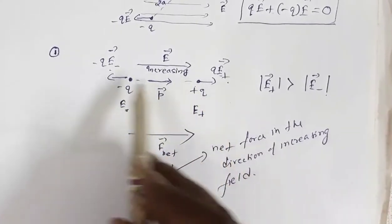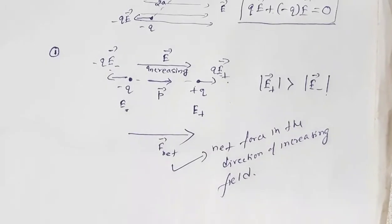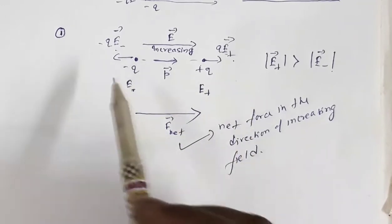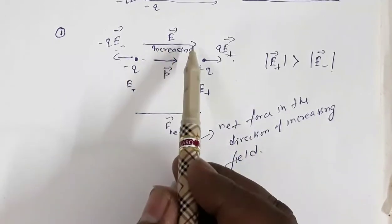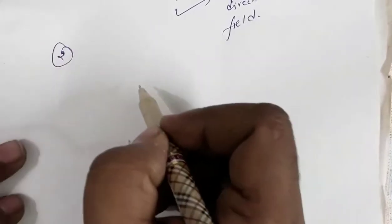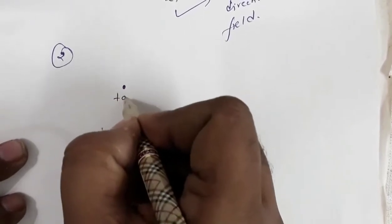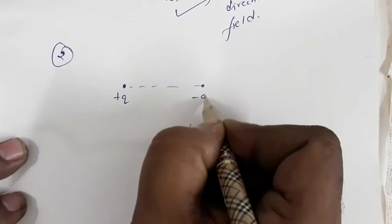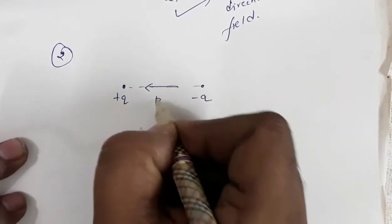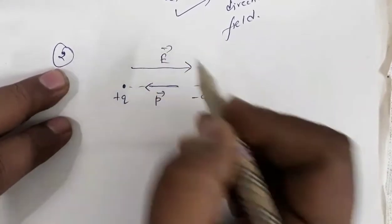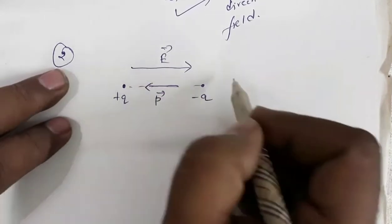So the net force is in the direction of increasing field. In this case the dipole moment and the electric field are in the same direction. Now for the second case, let us consider the case where the dipole moment and electric field are in opposite directions. We have a positive charge and a negative charge, with the dipole moment pointing one way while the electric field is in the opposite direction, increasing in that direction.